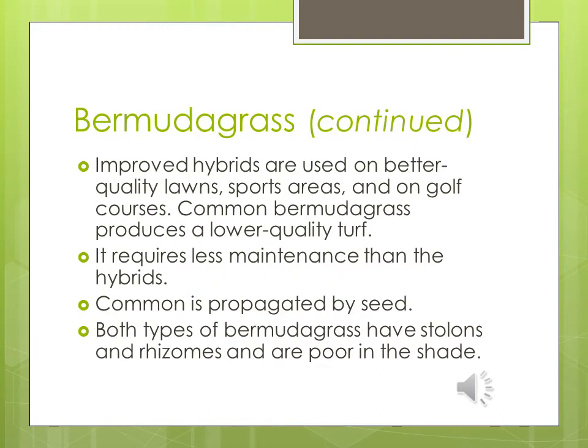More on Bermudagrass: improved hybrids are used on better-quality lawns, sports areas, and golf courses. Common Bermudagrass produces a lower quality turf — probably what you'd see at a schoolhouse. If you get common Bermudagrass in a yard, it is going to take over. Some clients absolutely won't stand for it; others don't mind.